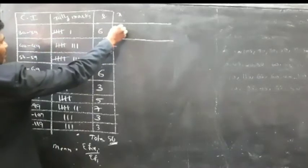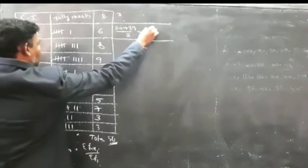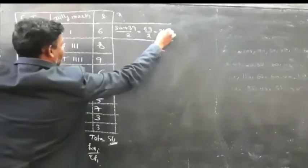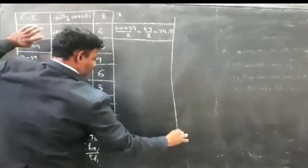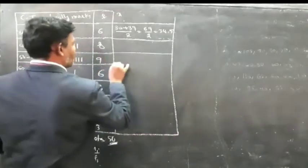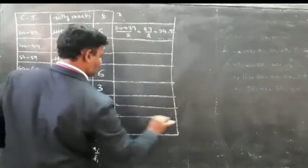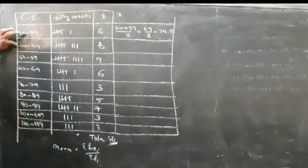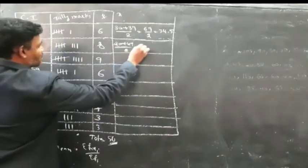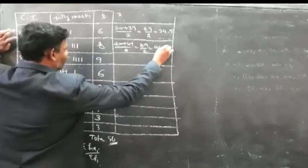Add the upper boundary and lower boundary: 30 plus 39 divided by 2 equals 69 by 2, which equals 34.5. For 40 to 49: 40 plus 49 divided by 2 equals 89 by 2, which equals 44.5.